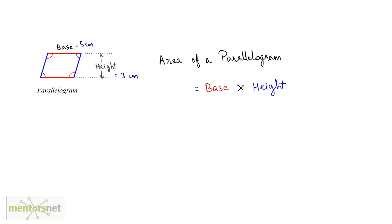Let us move on to a parallelogram. The area of a parallelogram is the product of its base and height. The base is the length of one of the parallel sides. Here the base is 5 cm and the height is 3 cm, so the area will be 5 times 3, which is 15 square centimeters.